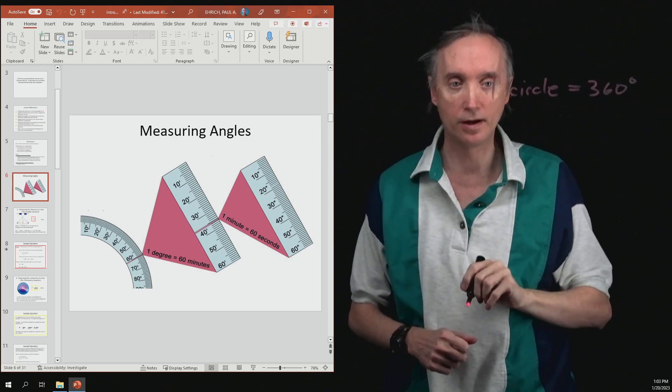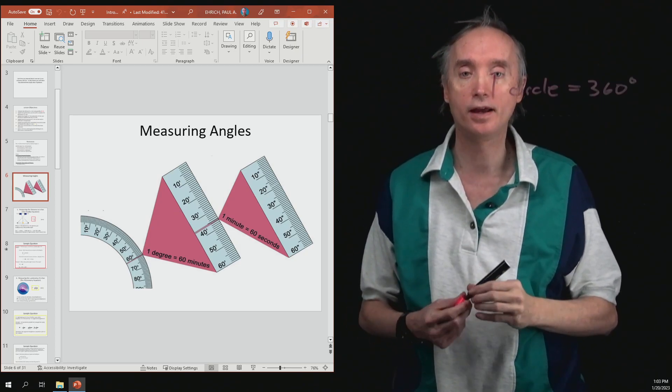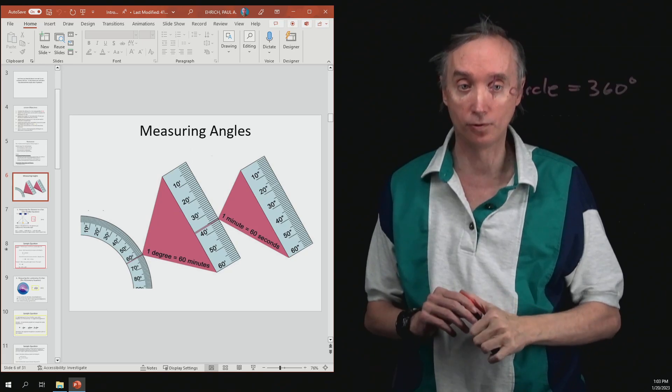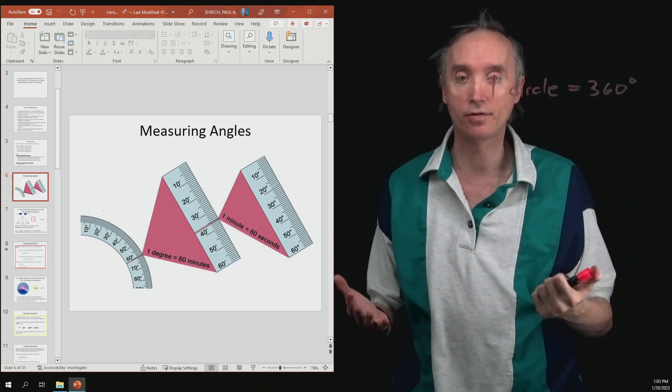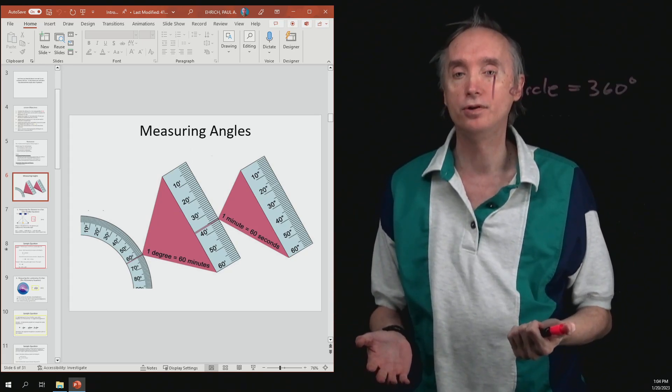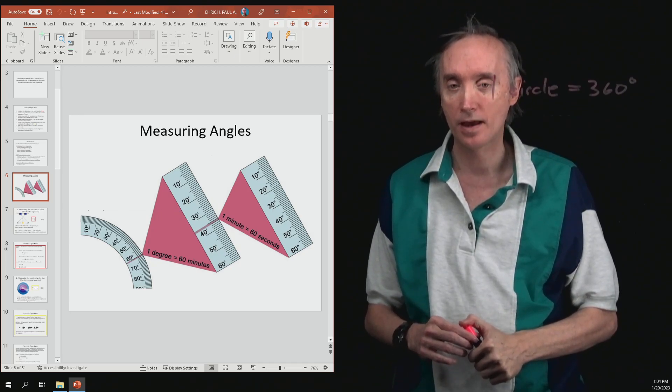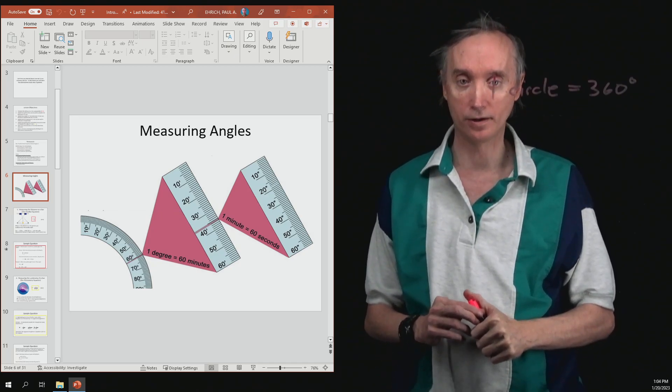Hopefully you've used a protractor before and you might have made a 30 degree angle or a 10 degree angle. Have you ever tried to make a 1 degree angle?